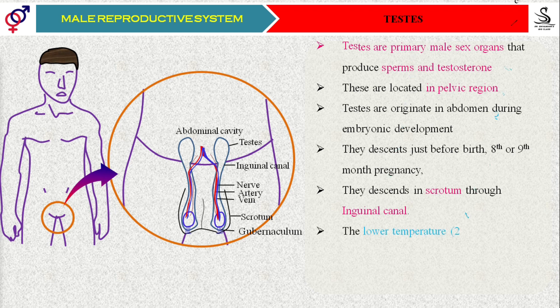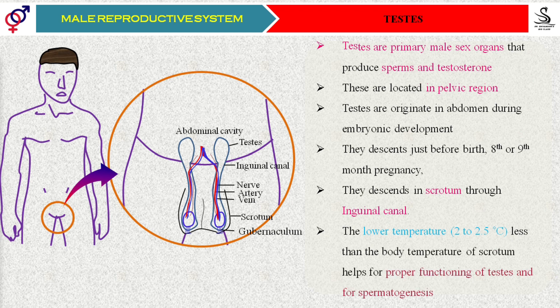One important question: why do the testes descend? Why don't they remain inside the abdominal cavity? Because spermatogenesis requires a temperature lower than the normal body temperature — about 2 to 2.5 degrees Celsius less than normal body temperature. If you don't have sperm production, then the individual will be infertile — not able to father children.